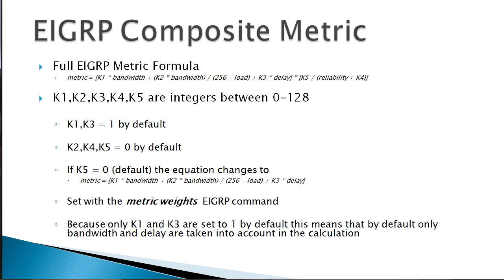So if you really look at this, because only K1 and K3 are set to 1 by default and all the other ones are set to 0, what that really means is that only bandwidth and delay are taken into account. If you walk through there and plug in the different K values, you'll notice that the K values that are 0 end up canceling out or zeroing out that piece of the equation that they're part of, and what you'll find is only bandwidth and delay end up being used.